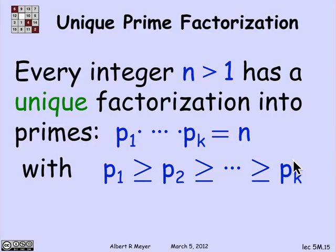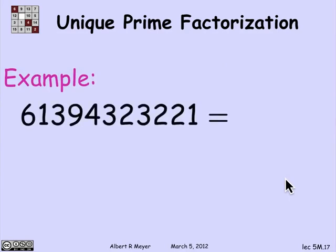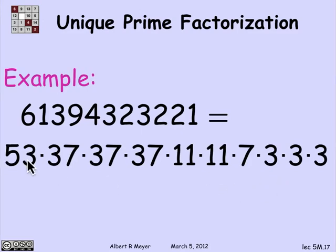This fundamental theorem of arithmetic is also called the prime factorization theorem. Spelled out formally: every integer n greater than 1 has a unique factorization into primes — it can be expressed as a product p1 · p2 · … · pk = n, with p1 ≥ p2 ≥ … ≥ pk. For example, there's a number that factors into the weakly decreasing sequence: 53, then three occurrences of 37, two 11s, a 7, and three 3s. If you try to express that number as a weakly decreasing sequence of primes, you will always get exactly this sequence — it's the only way to do it.